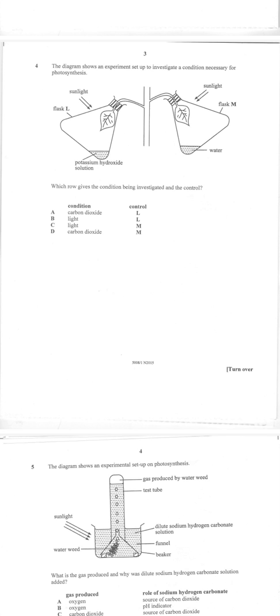The condition investigated is the one for carbon dioxide, and the control is flask M because it's having water instead of potassium hydroxide. Potassium hydroxide actually absorbs the carbon dioxide, so flask L is lacking carbon dioxide.